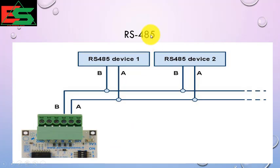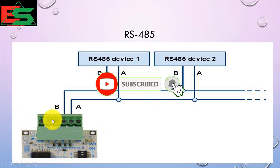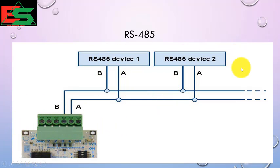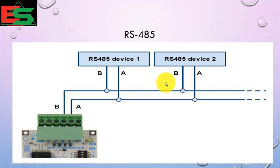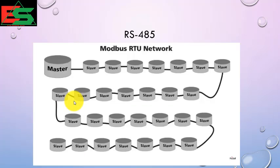In case of RS-485, it is a two-wire communication. One is our master device and the other is a slave. You can see the A and B two wires connecting all the other devices. These are the differences between RS-485 and RS-232. You can see the network of RTU — one master and multiple slaves.